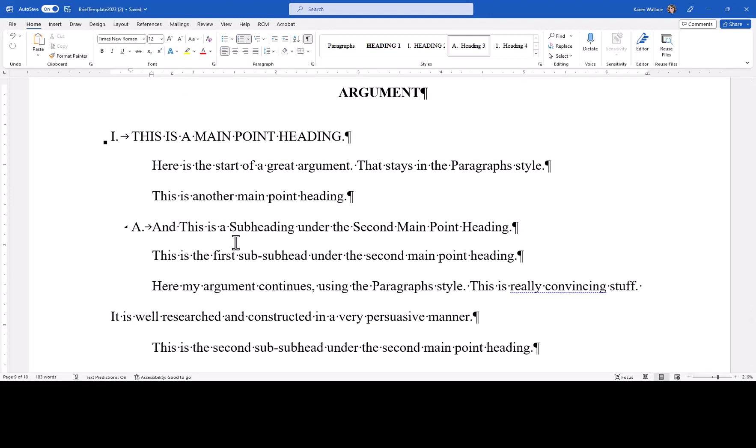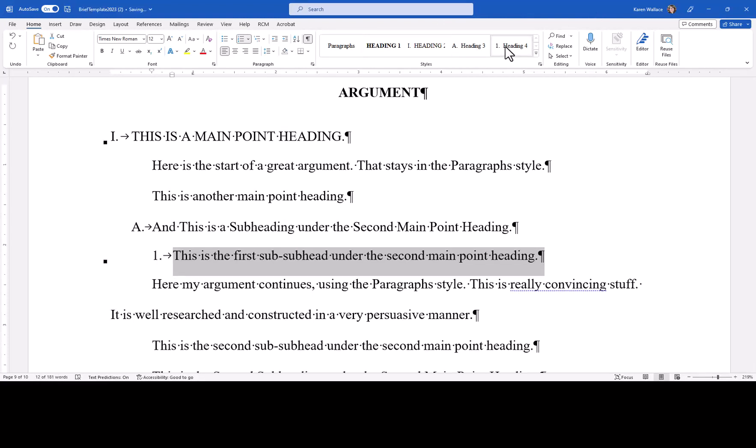Once I get that the way I want it, I can move on to my next heading, so I'm going to show you what a sub-subheading looks like. You select that and then you're going to select heading 4. That will place the heading at the Arabic numeral level of the outline. You're going to also need to ensure that this is in sentence case.